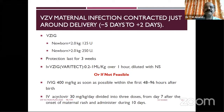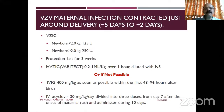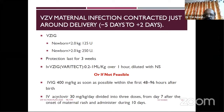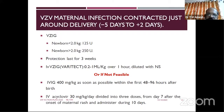If specific varicella-zoster immunoglobulin is not available, give IVIG at 400 mg/kg as soon as possible, preferably within two to three days. If the child is born between five days before delivery and two days after, give acyclovir at 10 mg/kg per dose, three doses — 30 mg/kg total — for seven days after onset of maternal rash, with admission for 10 days. If the mother's symptoms were from day 20 before delivery, antibody transfer may have occurred and it may be less serious.